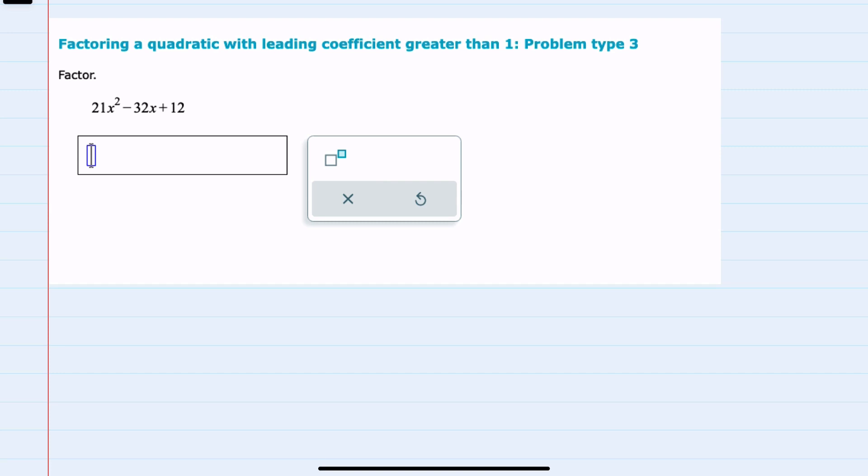We're given a quadratic here and asked to factor. Since a method isn't specified, I can use either trial and error or the AC method. For this example I will use trial and error, so I know that the factor form will resemble this.